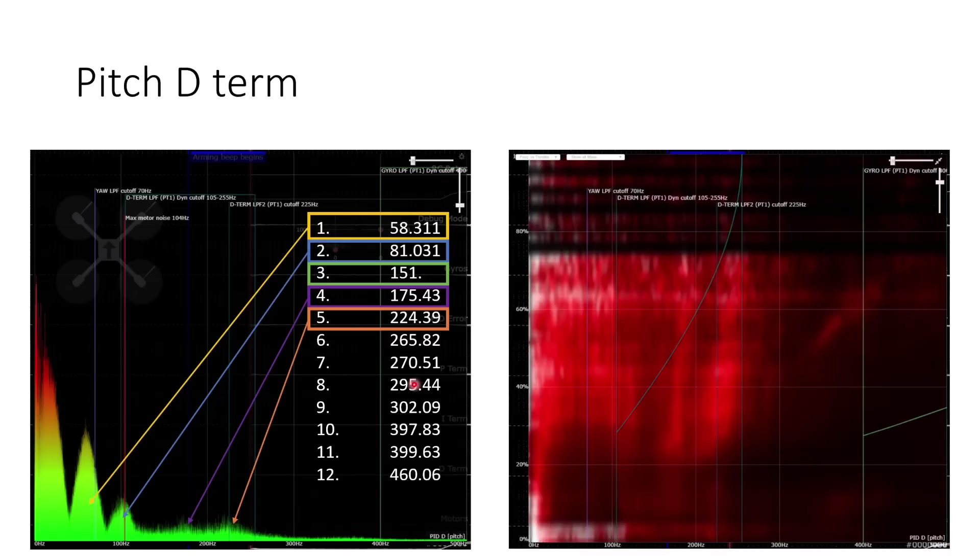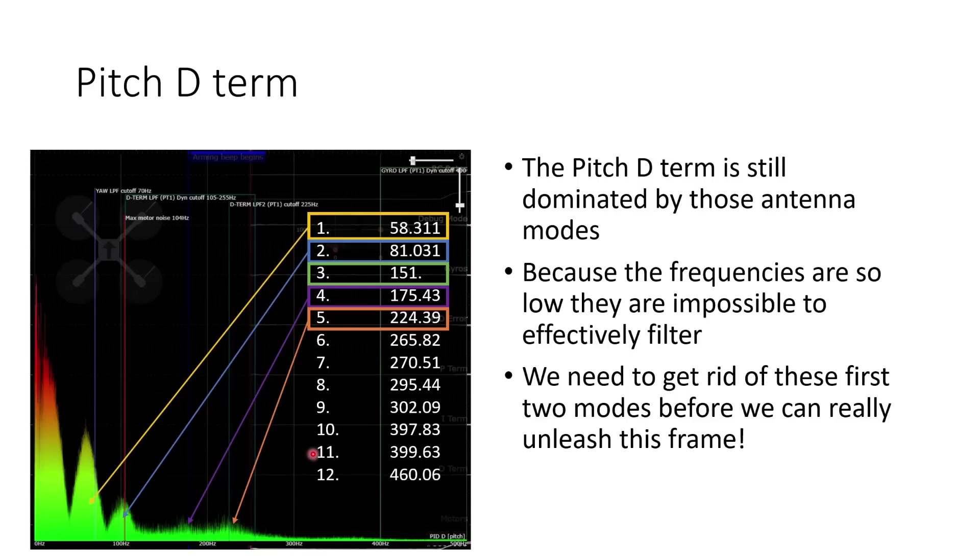If we look at the D term, again, it's a similar story to on the roll axis. Those first two antenna modes are really prominent. And then we really don't see very much of anything else because the low pass filter on the D term is filtering that out quite effectively. So we really can see that the pitch D term is still dominated by the antenna modes. The frequencies are too low for us to really effectively filter them, and we really need to address those two modes to be able to get the full performance out of the frame.